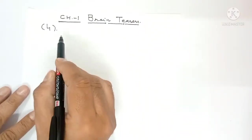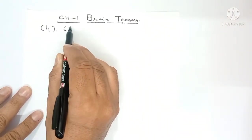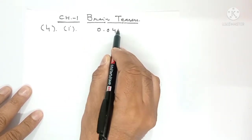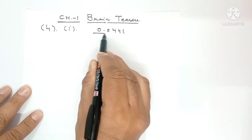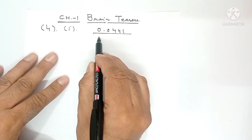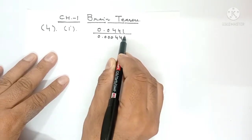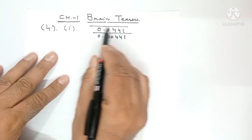So I am writing and explaining part number 1. We have 0.0441 divided by 0.0004441, and this is under a square root sign.